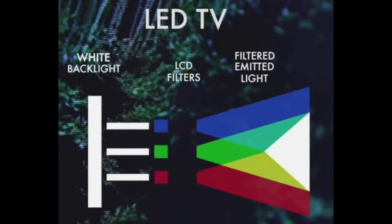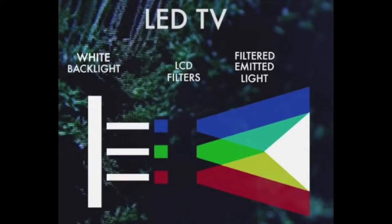Here we have to know something important: all the colors that we see, including black, are going to be obtained in a way that is, between quotation marks, artificial. The rear white LEDs are never turned off — they are always on to show us the colors of the image. So the black color, which is the case that interests us most, is achieved through that back light, which is why we will never get a pure and real black as if it were darkness, since we will always have, however black it is, that grayish tone that comes out due to the lighting coming from the rear panel.